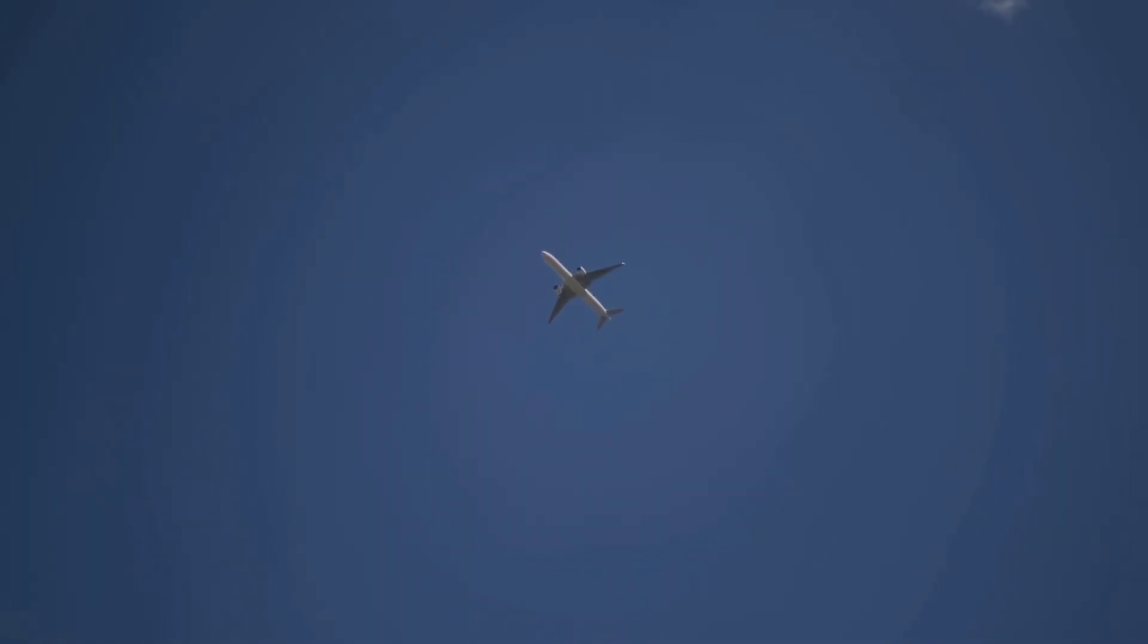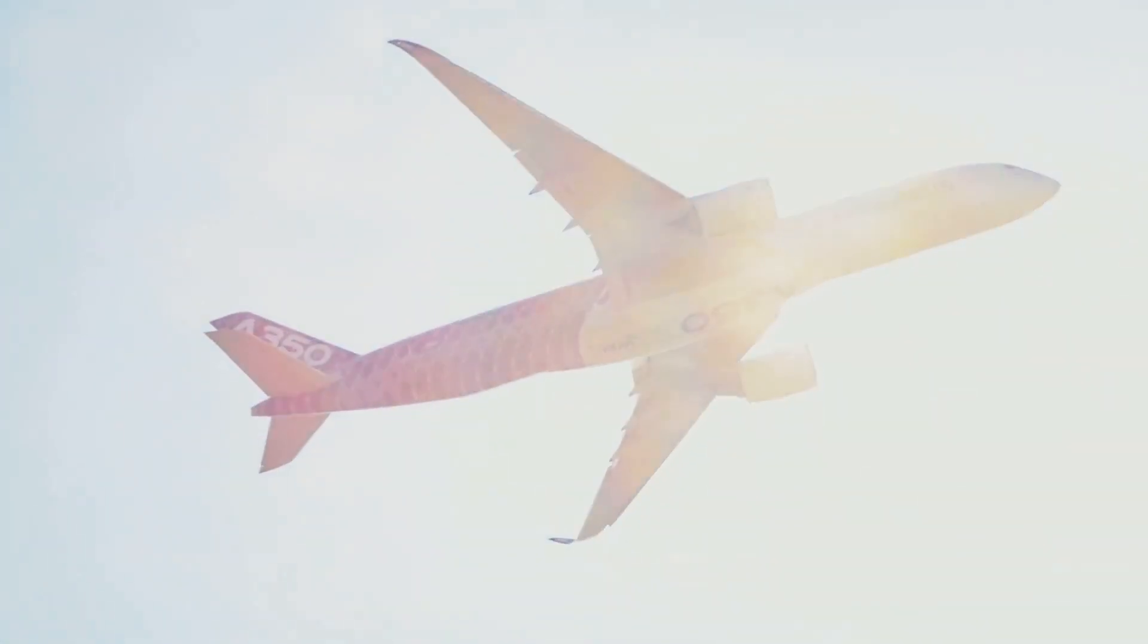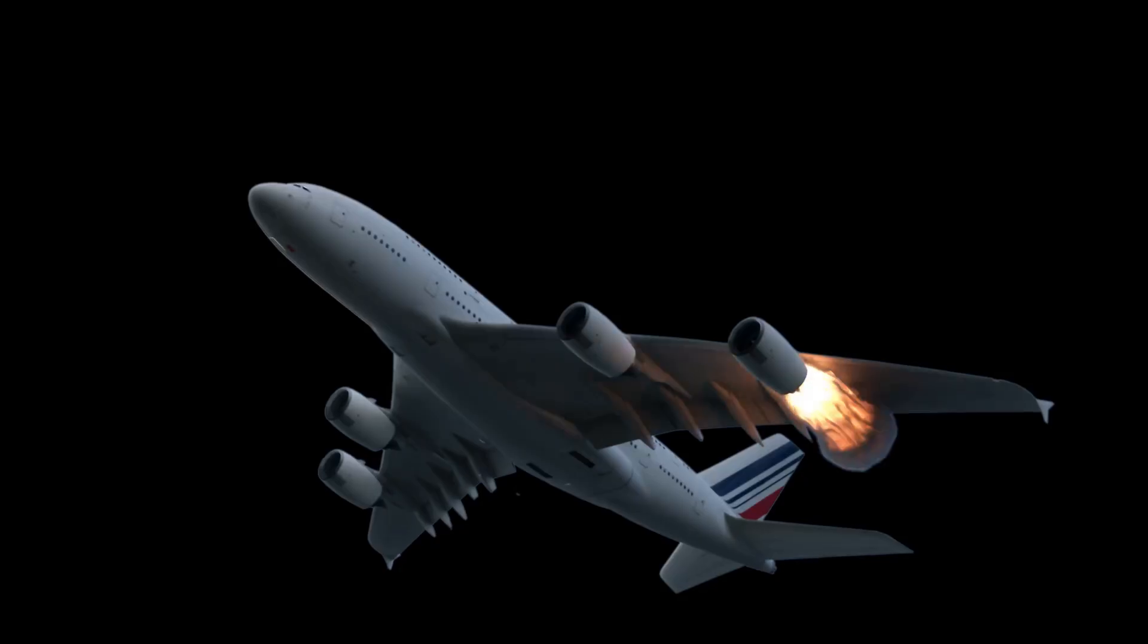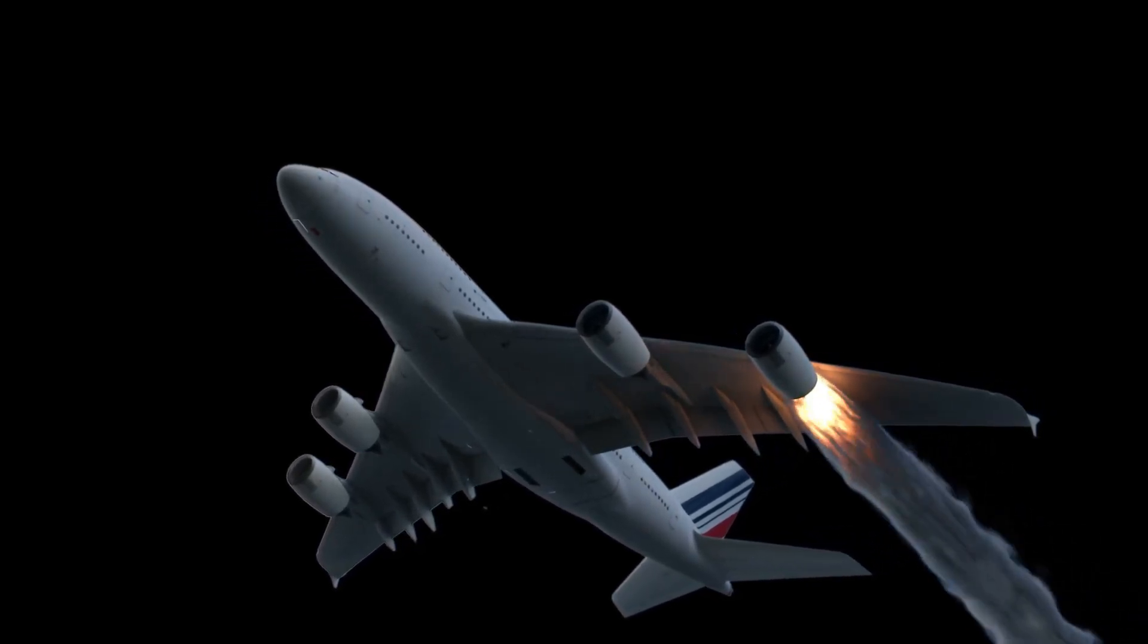Where does carbon fiber shine? Look to the skies. Modern jets like the Boeing 787 and Airbus A350 use carbon fiber composites for over half their structure. Lighter planes mean less fuel, longer range, and a smaller environmental footprint.